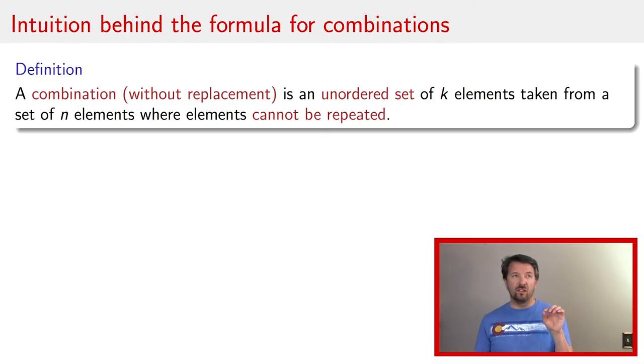So last time we talked about the fundamental rule of counting, but we're going to go a little bit different this time. Instead of talking about that fundamental rule of counting, we're going to derive the formula for combinations from the formula for permutations.